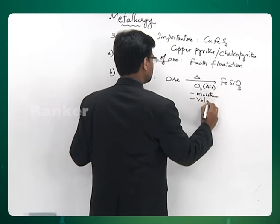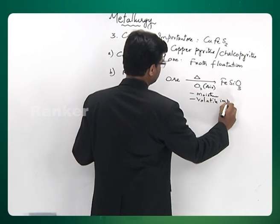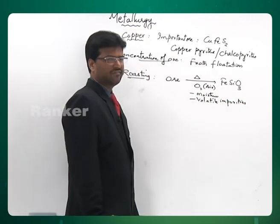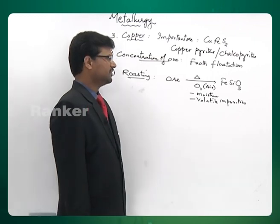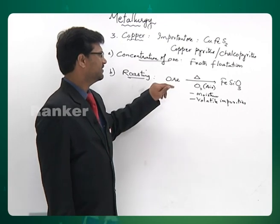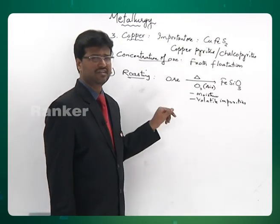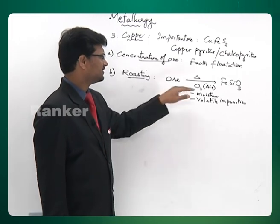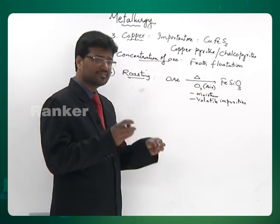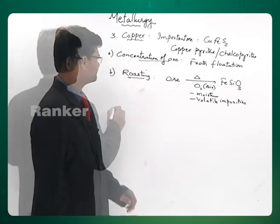Volatile impurities are also lost during roasting. Some of the Fe will be lost as FeSiO₃ because the ore is associated with some sand — when you oxidize it, ferrous sulphide becomes ferrous oxide, which reacts with the sand and is lost as FeSiO₃. After roasting, you still have lots of FeS and Cu₂S remaining in the mixture.